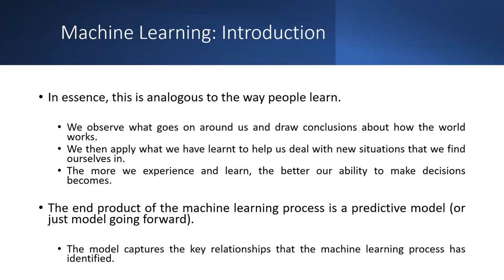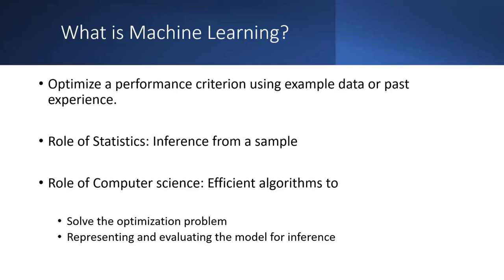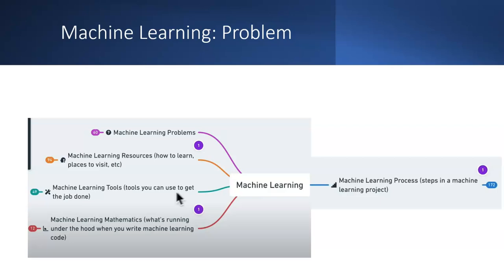A good model is a useful approximation built by learning general patterns from specific examples. Data is cheap and abundant — from customer transactions to human behaviors. For instance, people who bought 'The Da Vinci Code' also bought 'The Five People You Meet in Heaven.' Machine learning optimizes performance criteria using example data and past experience, combining statistics and computer science to solve optimization problems and evaluate models for inference.